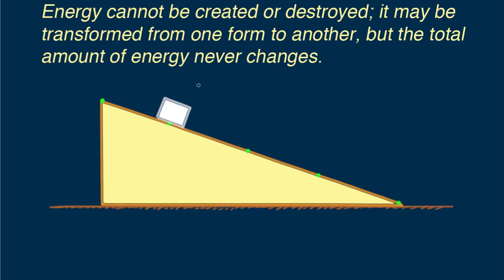And when the block is one quarter of the way down, its potential energy is 75 joules. And that means how much kinetic energy at this location? I hope you said 25 joules. Why? Because 75 joules plus 25 joules equals the total energy of 100 joules.